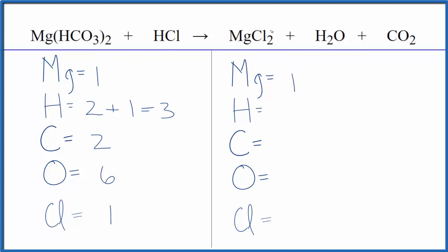On the product side, we have our magnesium. We have hydrogen, two of those, carbon, one of those. We have oxygens, one plus two. So we have three oxygen atoms, and then two chlorine atoms.